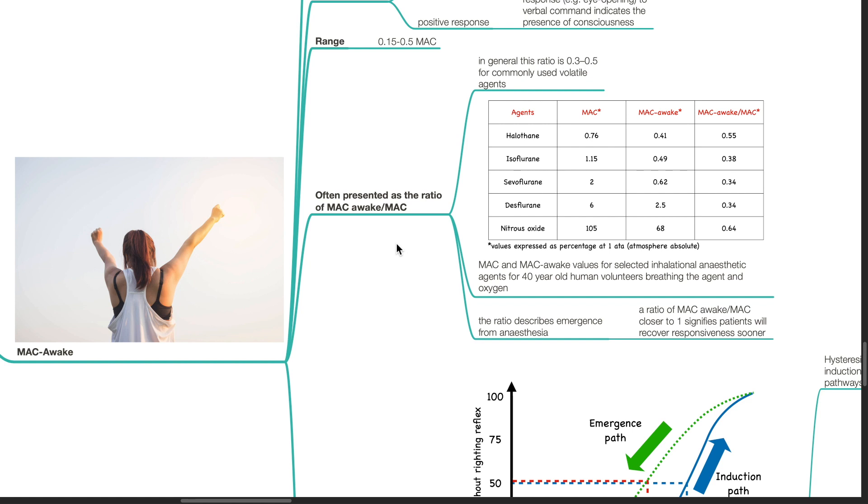This table shows the MAC and MAC awake values for selected inhalational anesthetic agents for 40-year-old human volunteers breathing the agent and oxygen. For halothane, MAC is 0.76, MAC awake is 0.41 and MAC awake to MAC is 0.55.